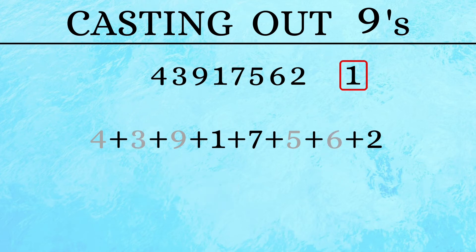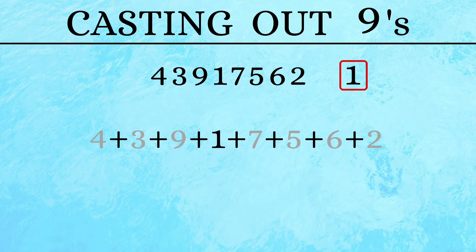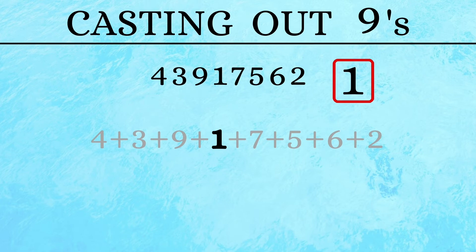7 plus 2 is also 9, so 7 and 2 are also cancelled. That leaves us with only 1. So we get our answer in 1 single step.